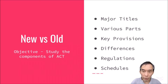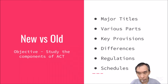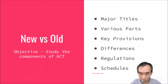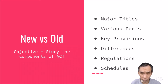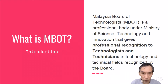The way I want to approach this comparison is to highlight that it is new versus old — 2015 versus 1981. Our objective is to study the components of the legislation: the major title, the various parts of the act, key provisions, the differences between the laws, how these are reflected in the various components of the act, and also the subsidiary legislation, which is the regulations and their schedules.